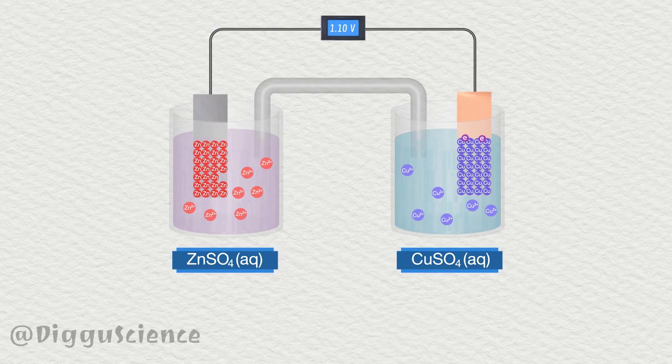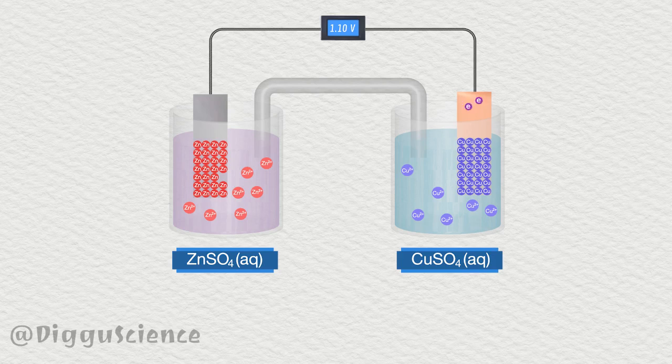Electrons that reach the copper sheet will be absorbed by copper ions to become copper atoms. These atoms will stick to the surface of the copper sheet.